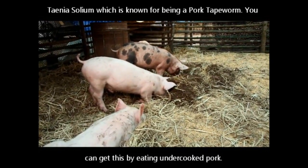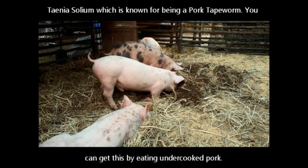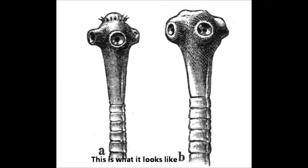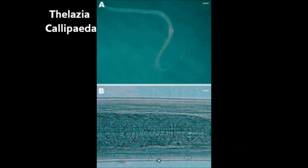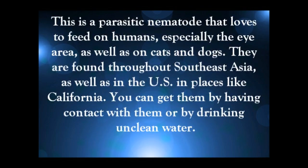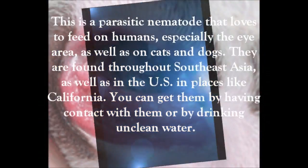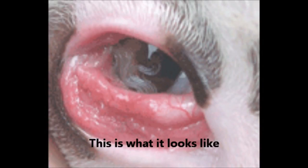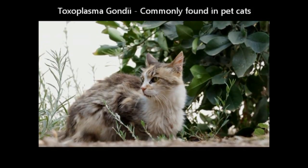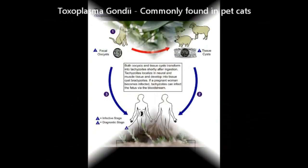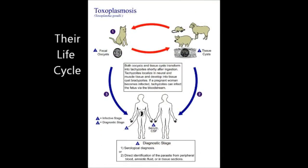Next is Lazia calipida, a parasite that feeds on humans, cats, and dogs. It is found throughout Southeast Asia as well as in parts of the US like California, and you can get it by drinking unclean water. Next is Toxoplasma gondii, commonly found in house cats. All of these parasites are particularly dangerous because they can get into the eye area, which is very close to your brain. The most deadly parasites can make their way from the eyes into the brain, potentially causing blindness, nerve damage, and mental impairment.